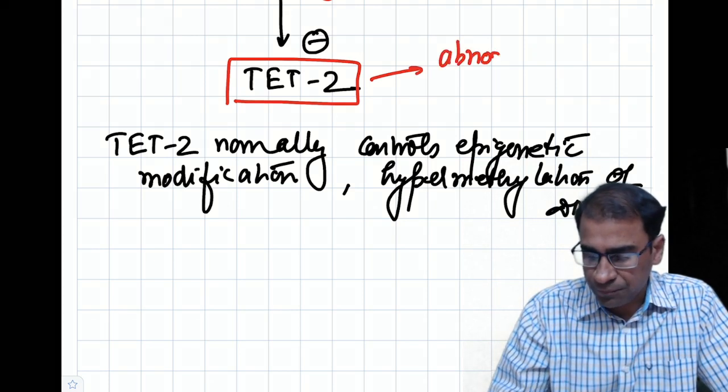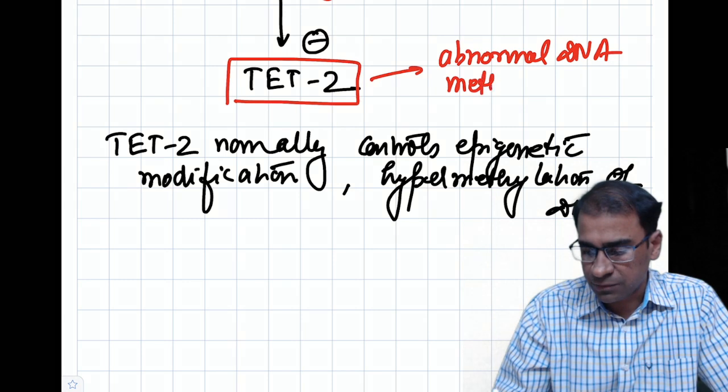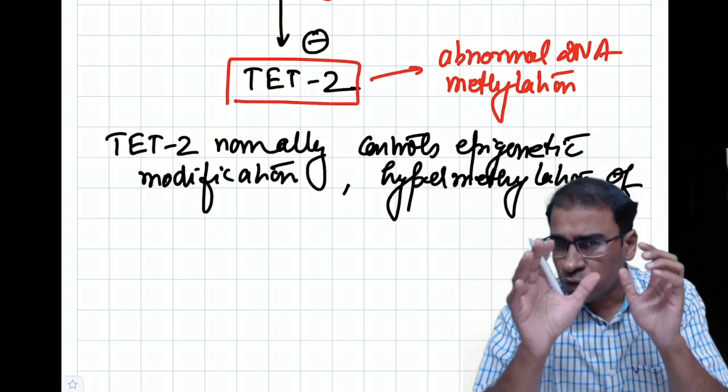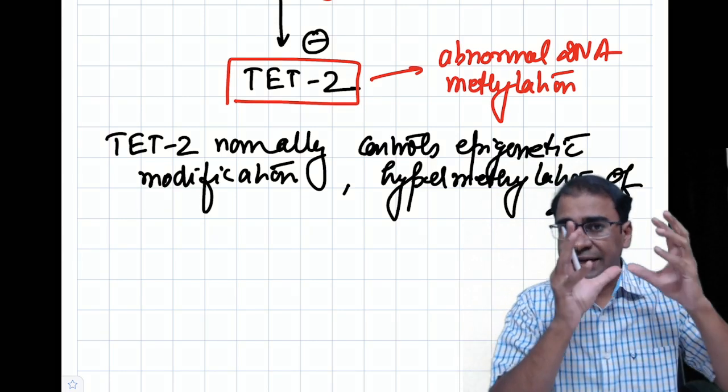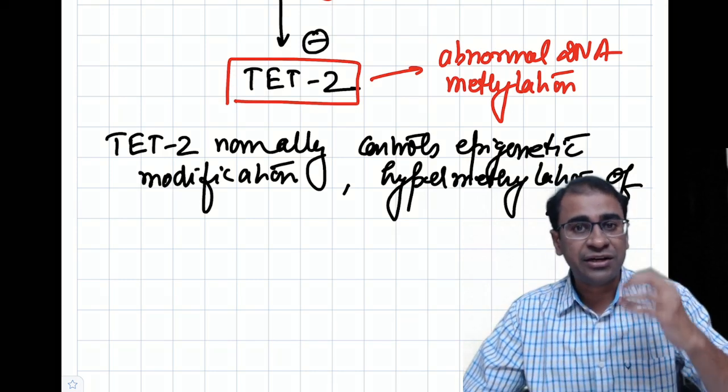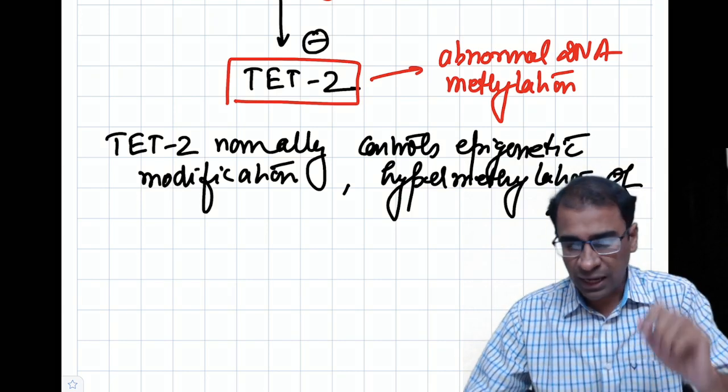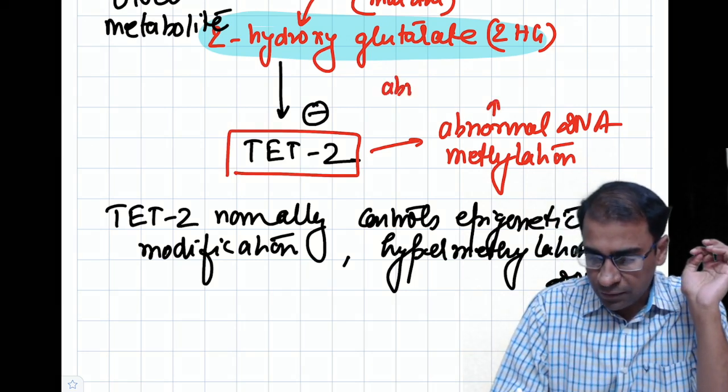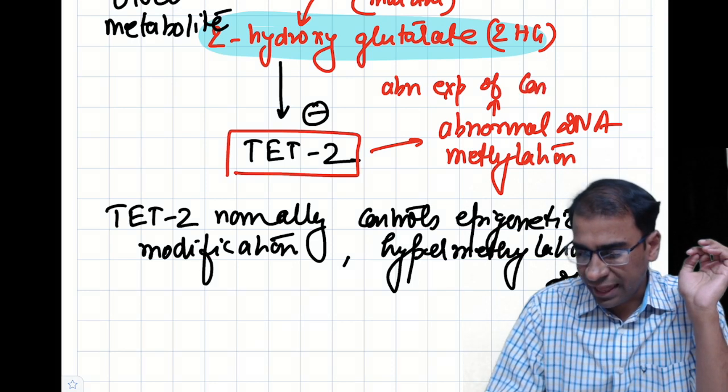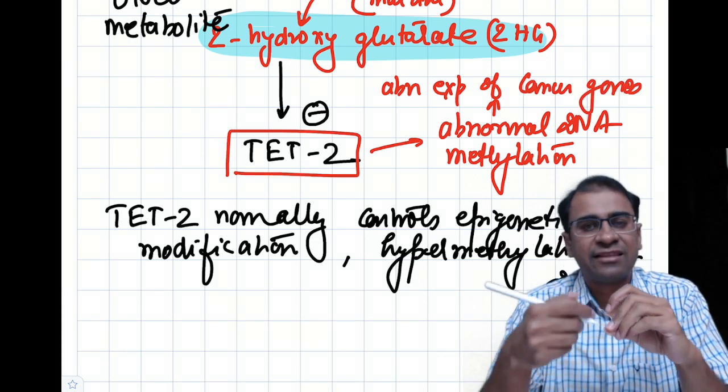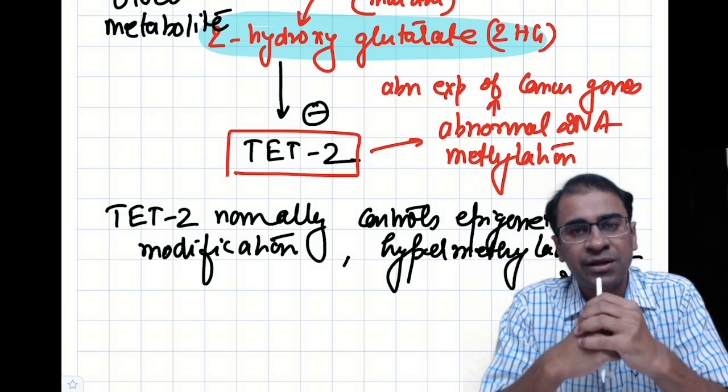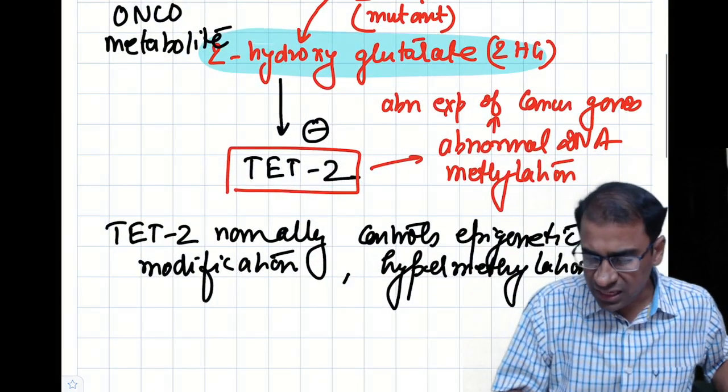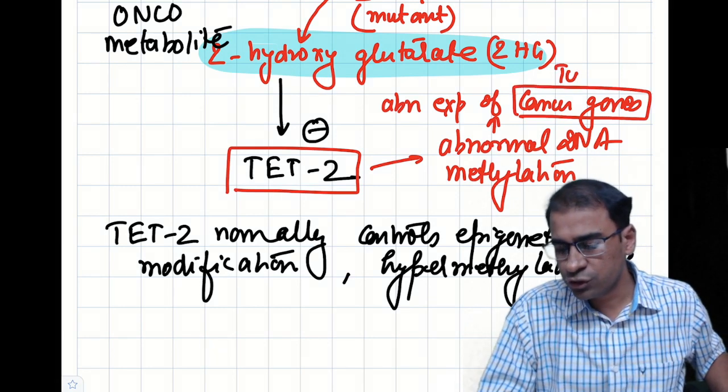With abnormal DNA methylation, it causes abnormal epigenetic modification. Epigenetics is something in which the DNA sequence does not change but the DNA expression changes. This abnormal DNA methylation leads to abnormal expression of cancer genes, including RAS and receptor tyrosine kinase. This abnormal expression of cancer genes leads to tumors.